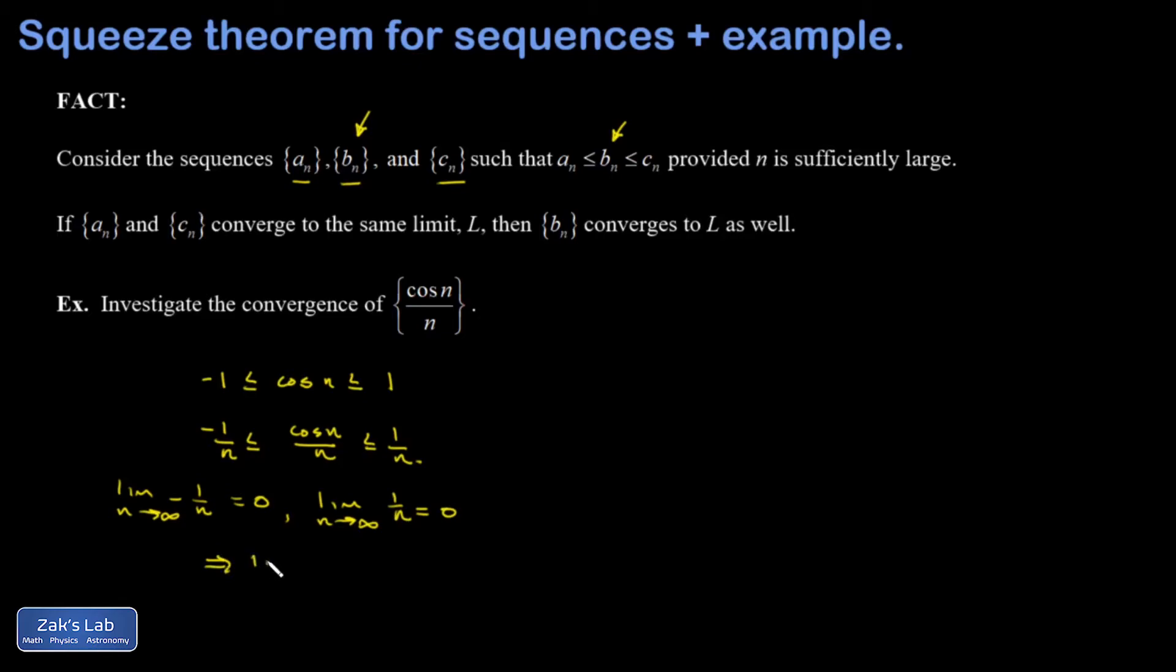So this implies the limit as N goes to infinity of cosine N over N is also equal to zero. The sequence converges to zero.